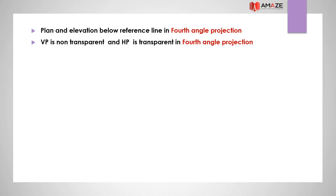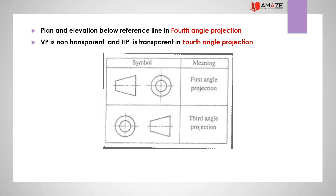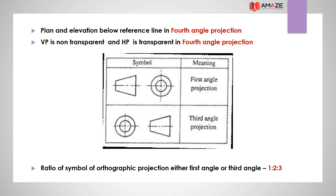The symbol for first angle projection and third angle projection are different. The ratio for the symbol of orthographic projection — either first angle or third angle — is 1:2:3.